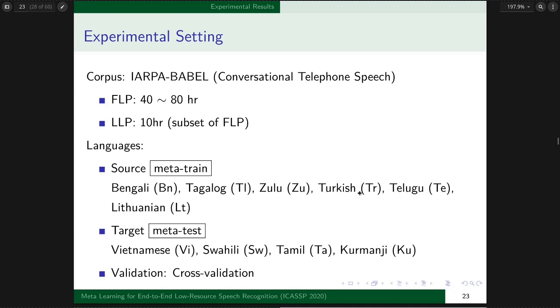We use Bengali, Tagalog, Zulu, Turkish, Telugu, and Lithuanian as source languages in meta-train. We use Vianese, Swahili, Tamil, and Kurmanji as target languages evaluated during meta-test. For validation, to decide which pre-training step should be picked, we use cross-validation. For example, if we adapt on Vianese, we use Swahili, Tamil, and Kurmanji as validation sets.